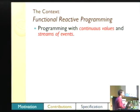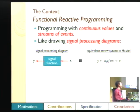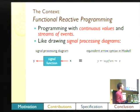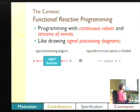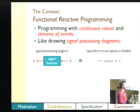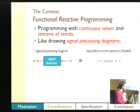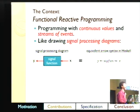The context we're working in is functional reactive programming. It's about programming with continuous values and streams of events, and it works like drawing a signal processing diagram. Haskell is really great here because of the arrow syntax. In a signal processing diagram, you might have a box-and-pointer diagram where the box is the signal function and the lines are all the values streaming through your diagram. In Haskell we can have code that's exactly this — a signal function between the arrow syntax to move the values through.